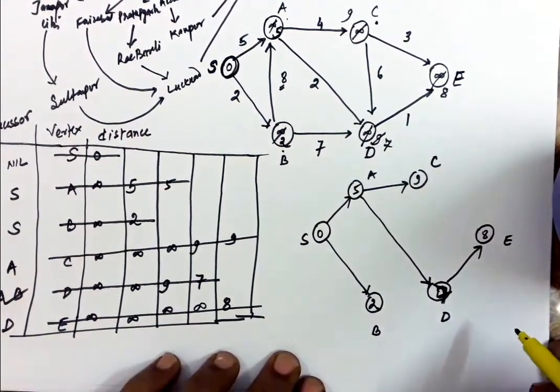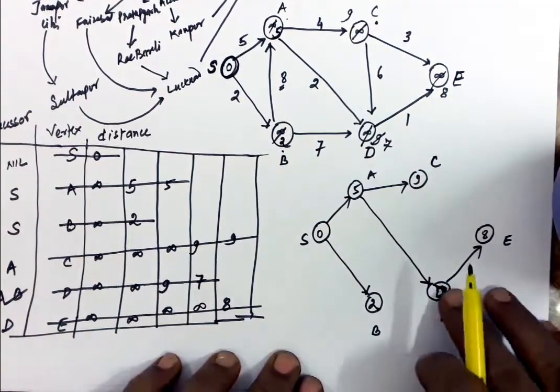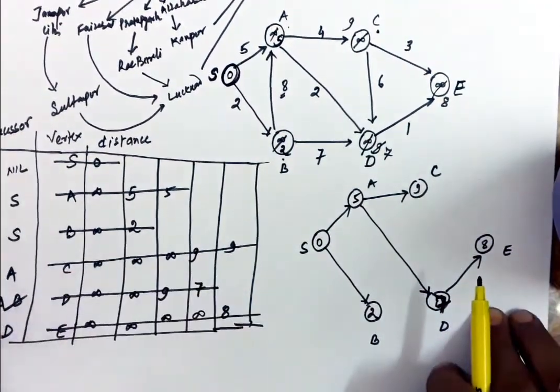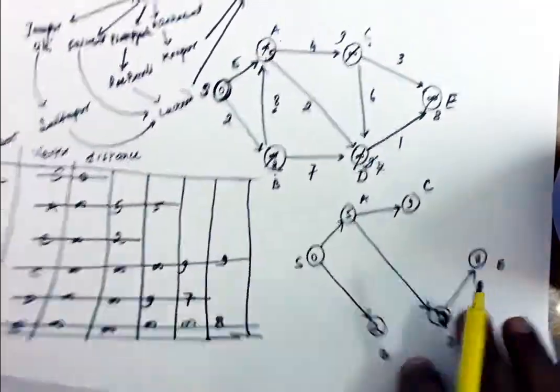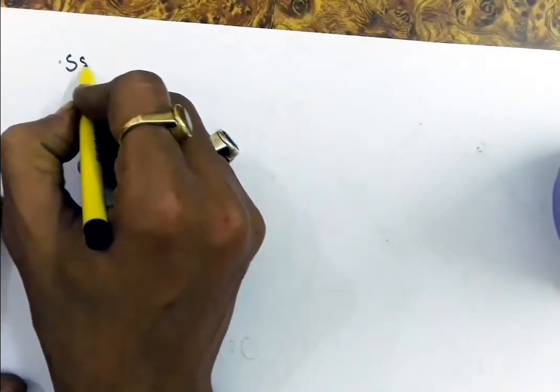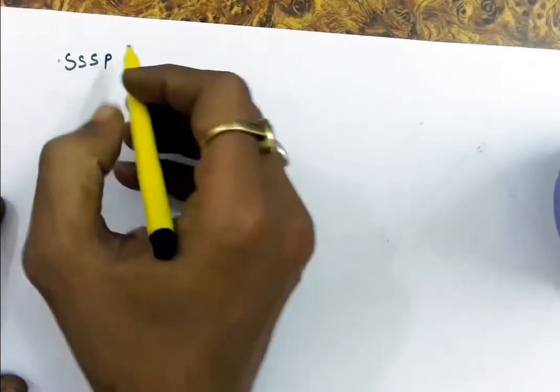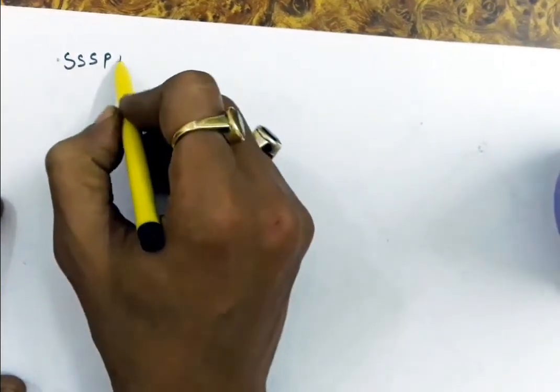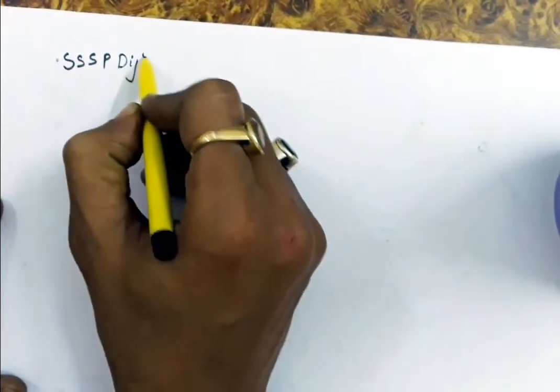Now let us try to write the algorithm for the single source shortest path. The algorithm will be very similar to Prim's algorithm. This method that we have followed is called Dijkstra's method.